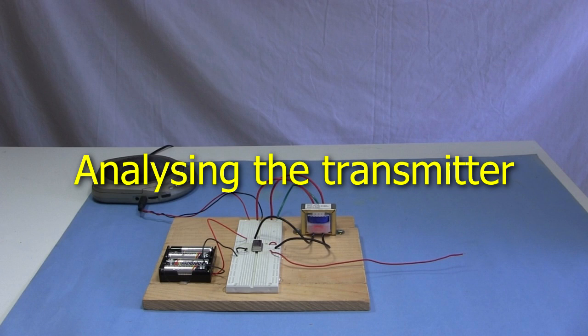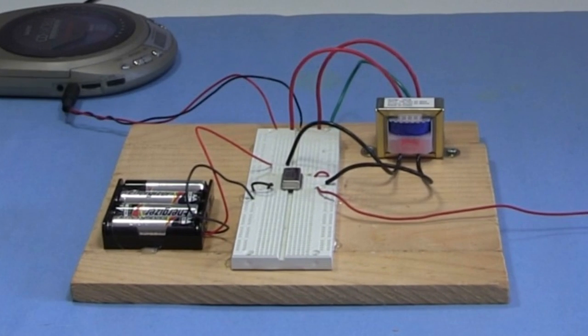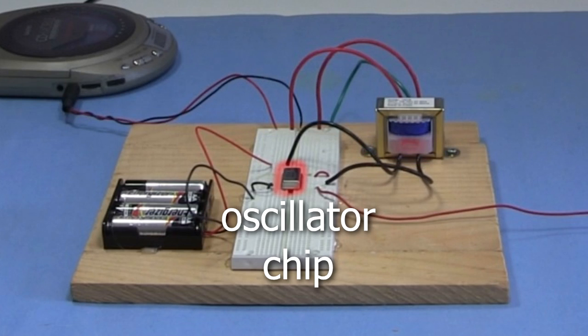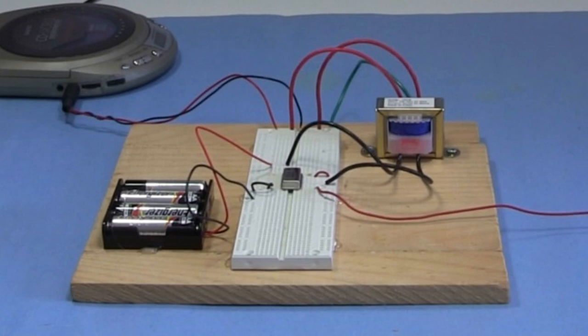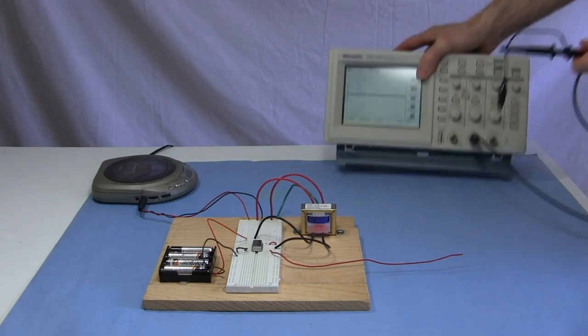Now that you know what the radio wave that the transmitter puts out looks like, let's look at the transmitter itself. It's a very simple AM transmitter. It consists of some batteries, a transformer, and an oscillator chip. It's not a very good transmitter. It broadcasts a lot of extra frequencies at the same time that it shouldn't. But its simplicity makes it ideal for this demonstration.